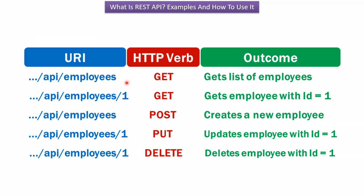To get the list of employees, use this URI with HTTP method GET. To get the employee with ID 1, use this URI with HTTP method GET. To create a new employee, use this URI with HTTP method POST. To update the employee with ID 1, use this URI with HTTP method PUT. And to delete the employee whose ID is 1, use this URI with HTTP method DELETE.